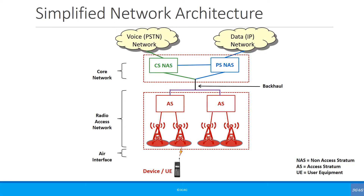What exactly is backhaul? If we look at a simplified network architecture, we can see that it can be split into radio access network, core network, and air interface. The link between the radio access network and the core network is referred to as backhaul.